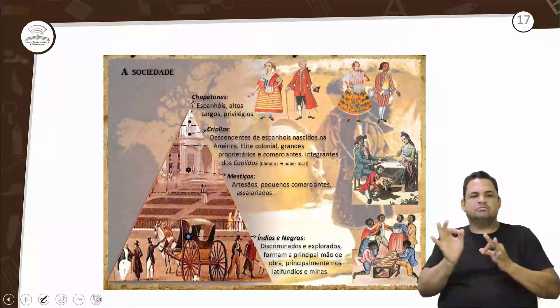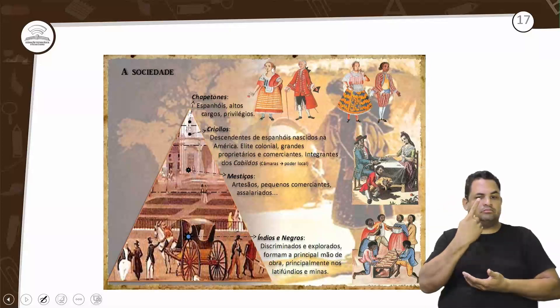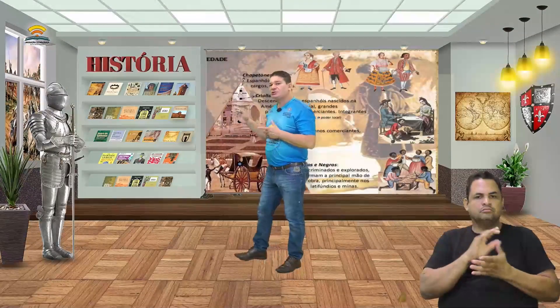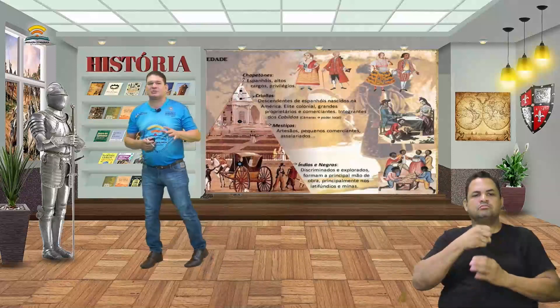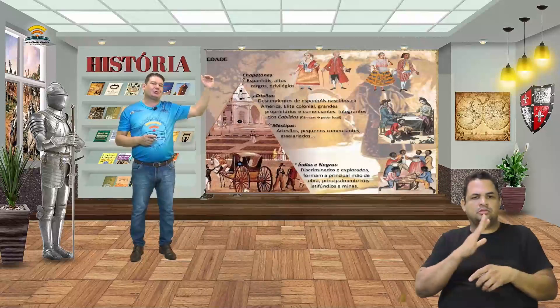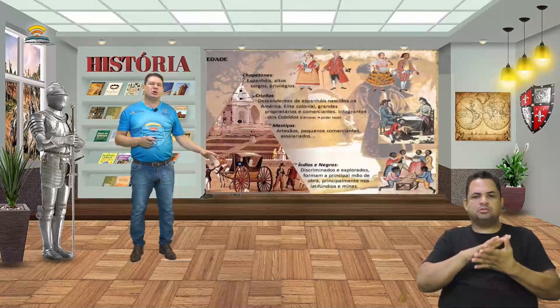A sociedade tinha uma determinada característica: primeiramente o contato, depois a colonização, e então se formou a sociedade espanhola. Os chapetones no topo, depois os crioulos, os mestiços, e na base os índios e os negros — a base explorada, quem trabalha e sustenta os demais.